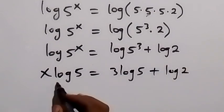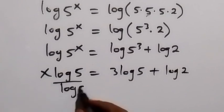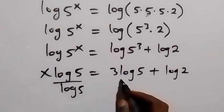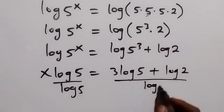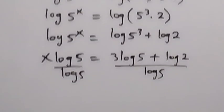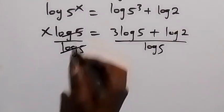In the next step we can divide both sides by log 5. We divide this side by log 5 and divide the other side by log 5, and log 5 cancels each other here.